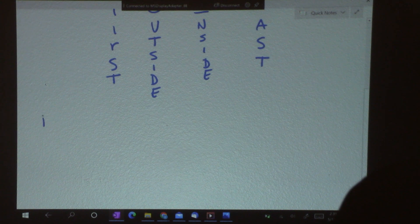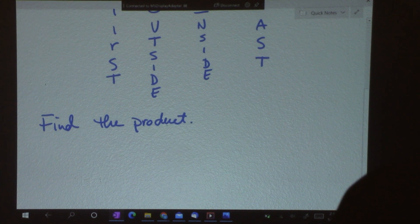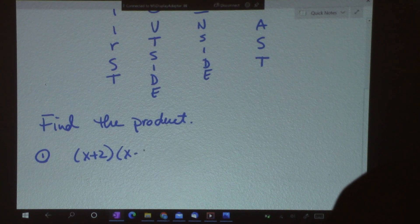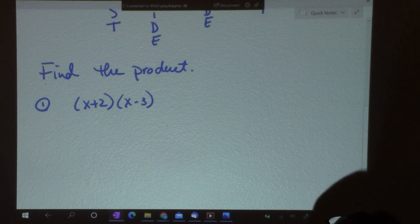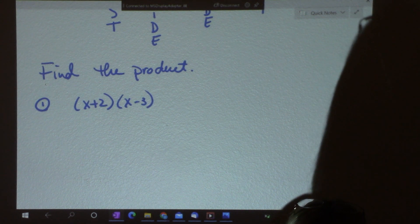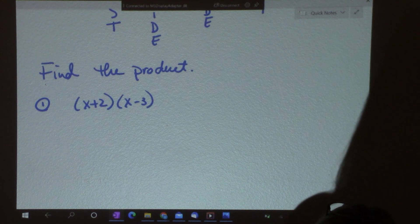So here's number one, find the product. Alright, so here we are, x plus 2 times x minus 3. So if you think about it, you've got four terms here. You've got x, 2, x, and negative 3.